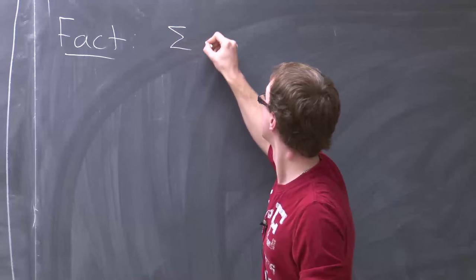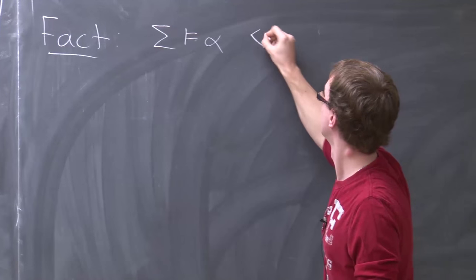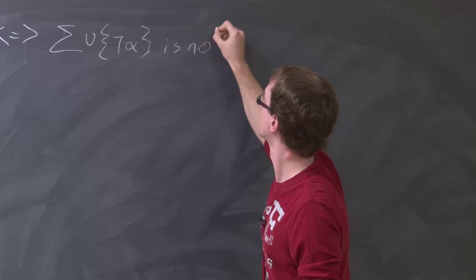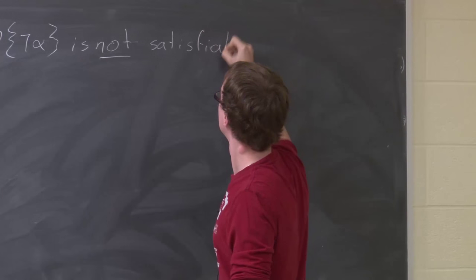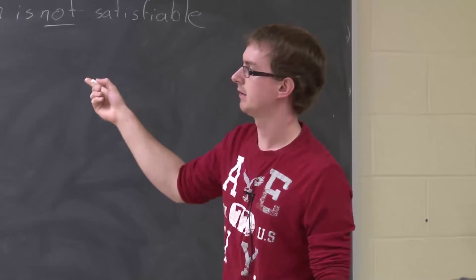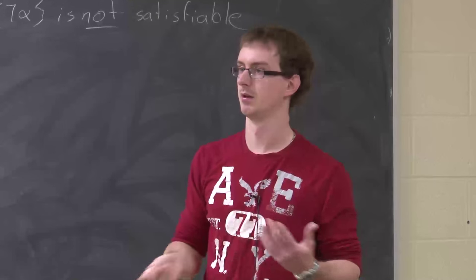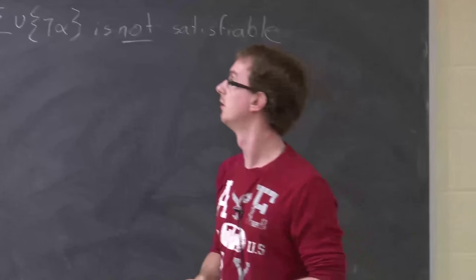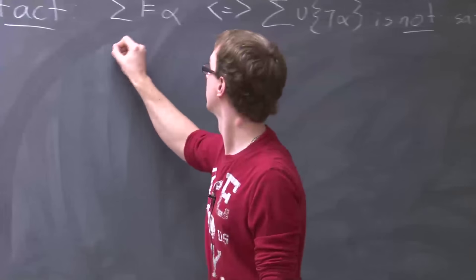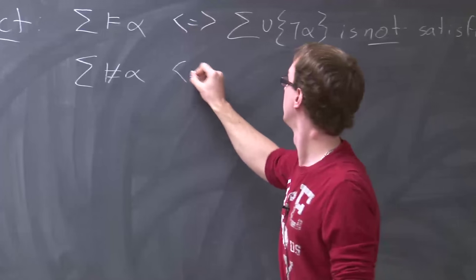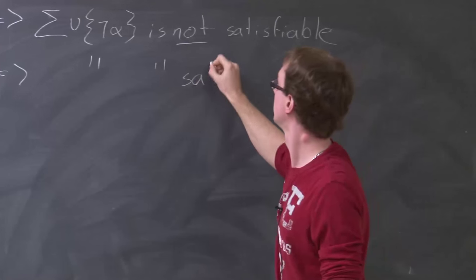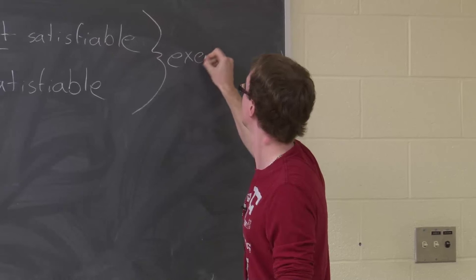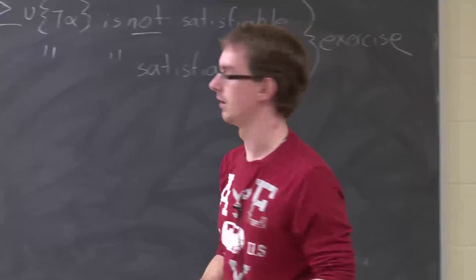To see why that fact holds, you look at each definition and show the two directions. Since it's an if-and-only-if, we can negate both sides: if Sigma cannot prove Alpha, then Sigma together with not-Alpha is satisfiable. We'll leave the full proof as an exercise, but we'll use this fact several times throughout today's lecture.